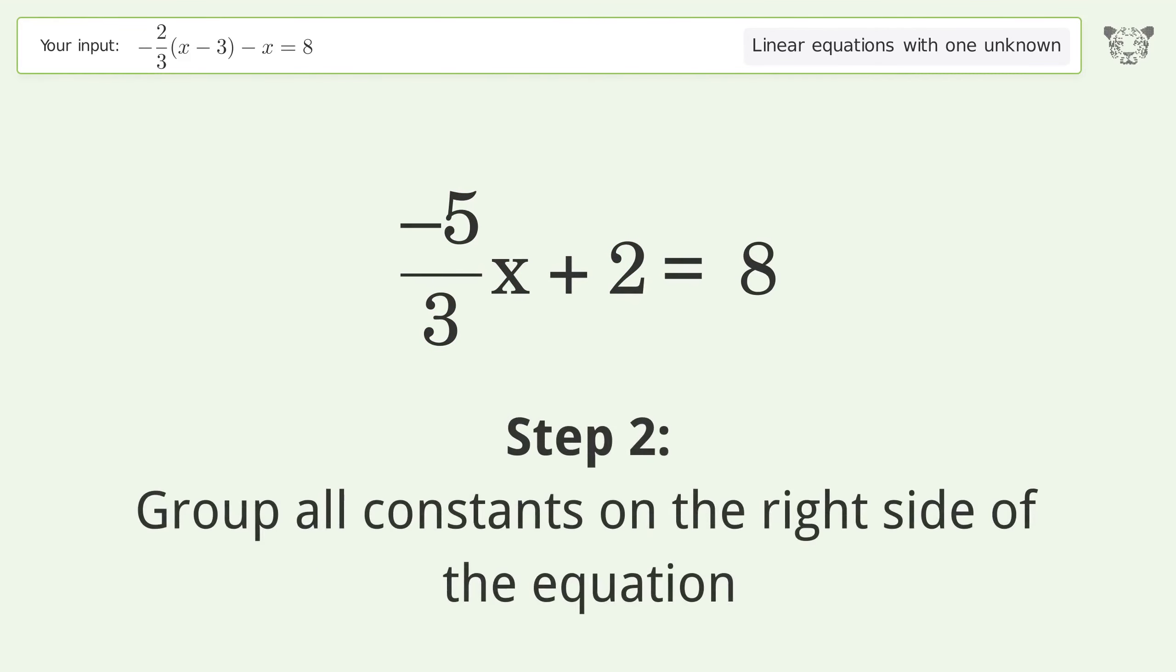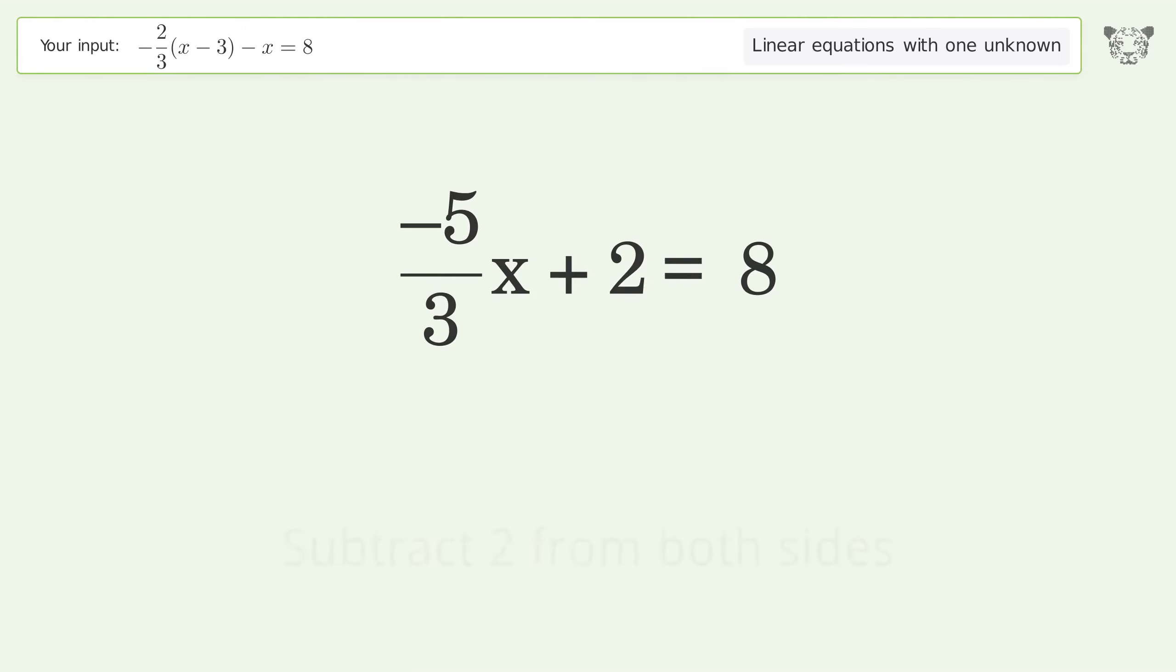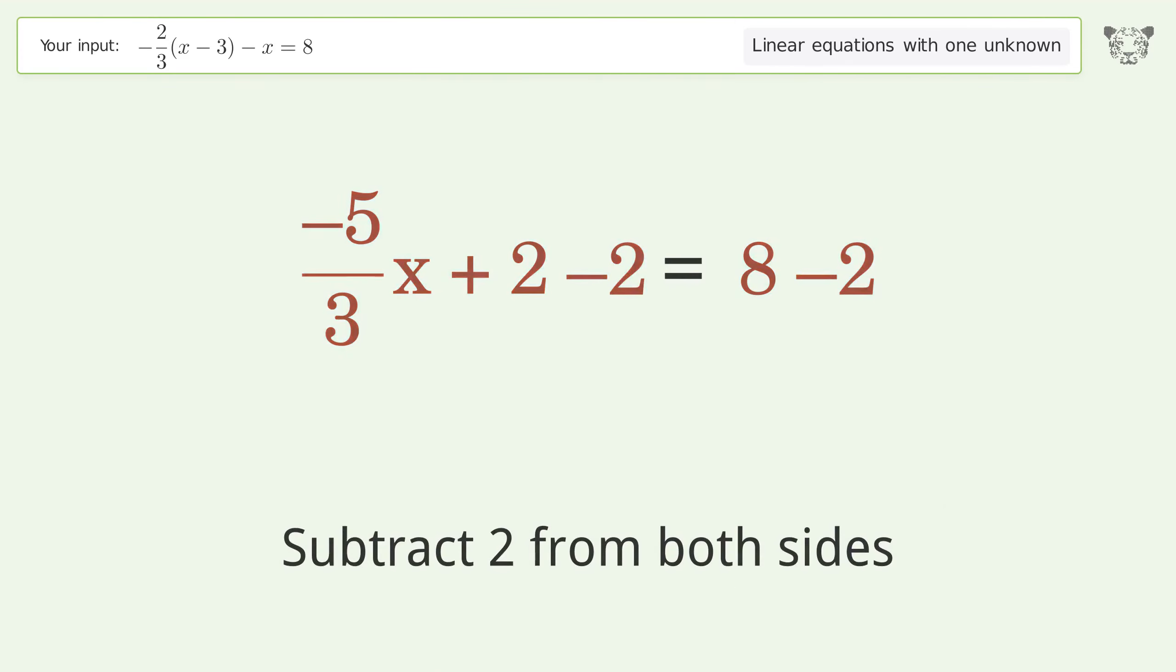Group all constants on the right side of the equation. Subtract 2 from both sides. Simplify the arithmetic.